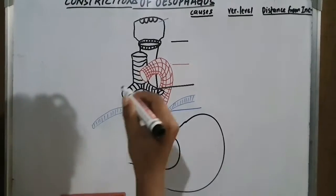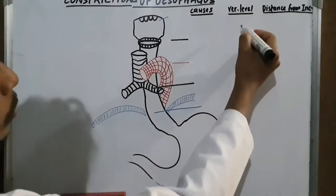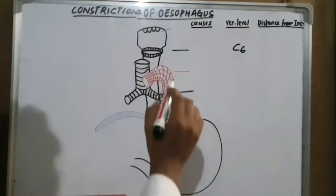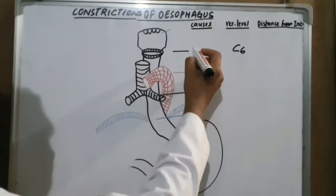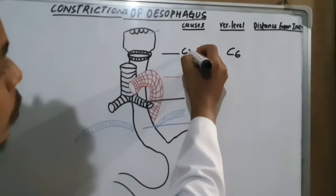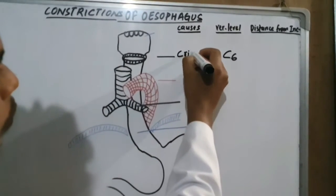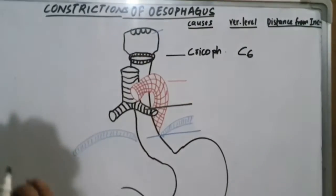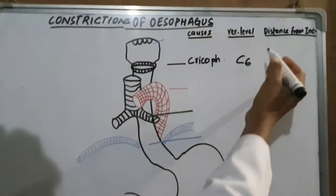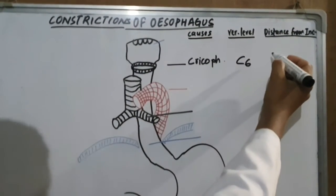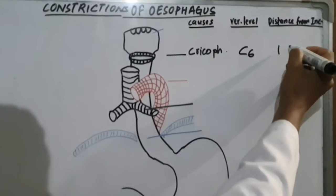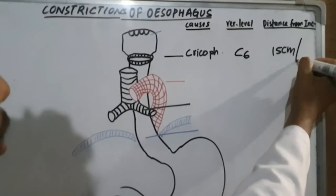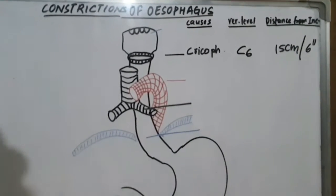The first constriction is at vertebral level C6, caused by the cricopharyngeus muscle crossing the oesophagus. It is at a distance of 15 centimeters, or 6 inches, from the upper incisors.